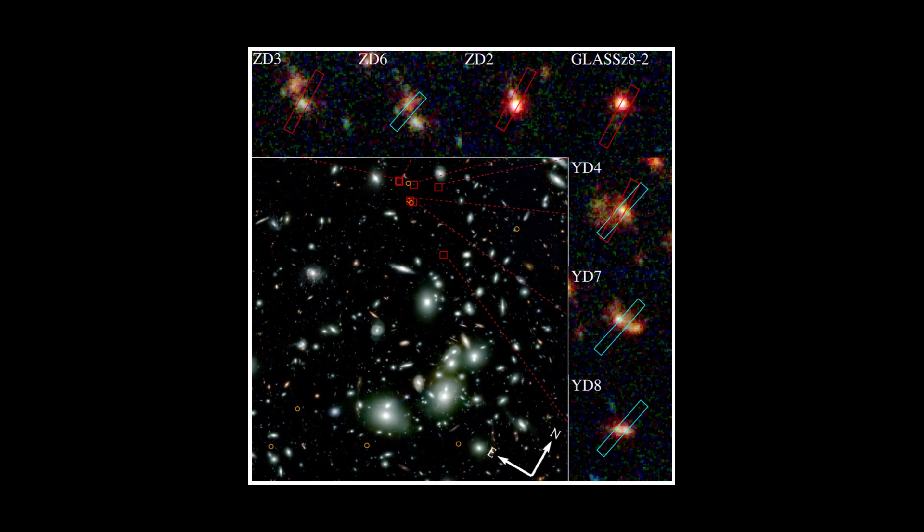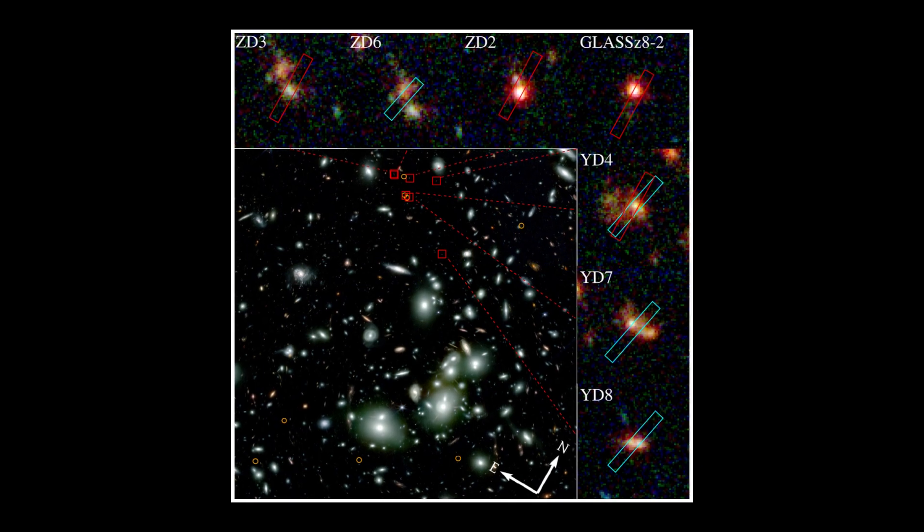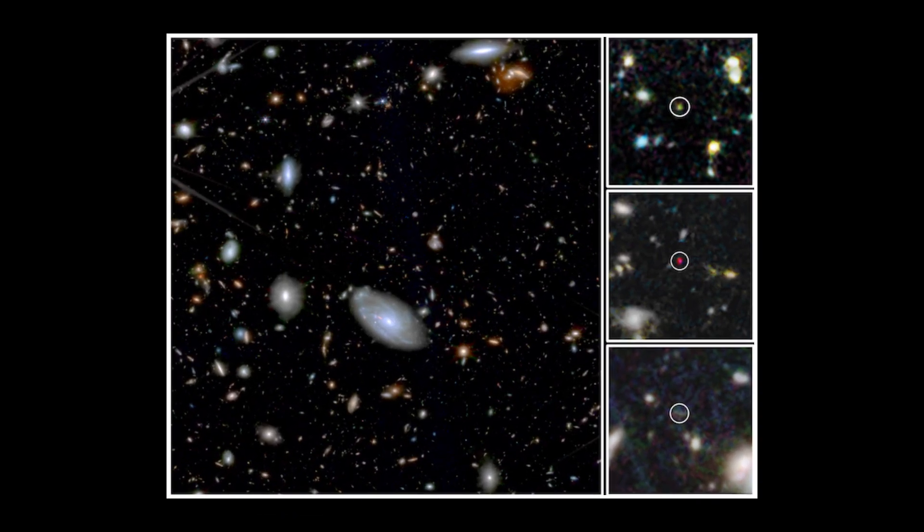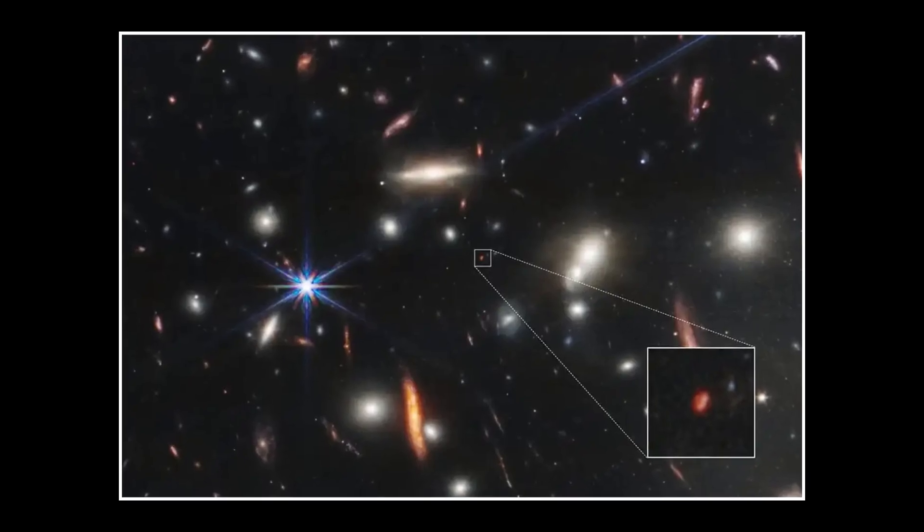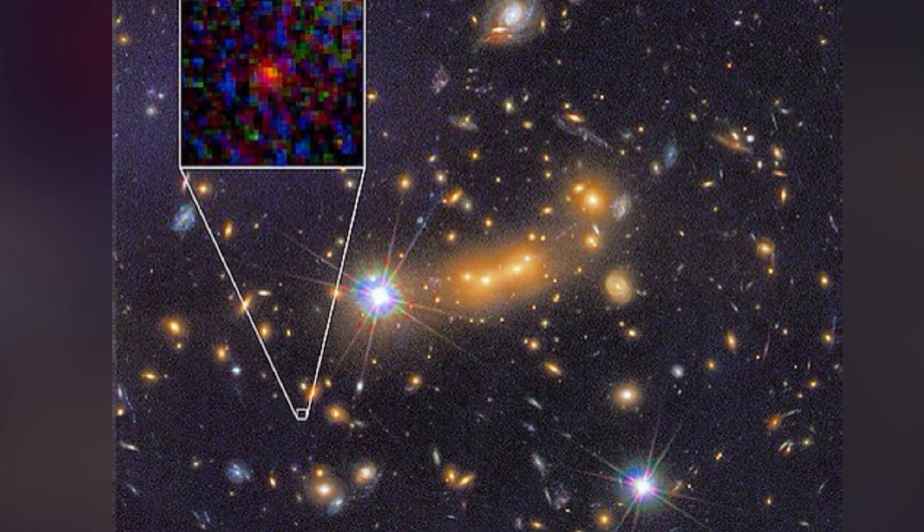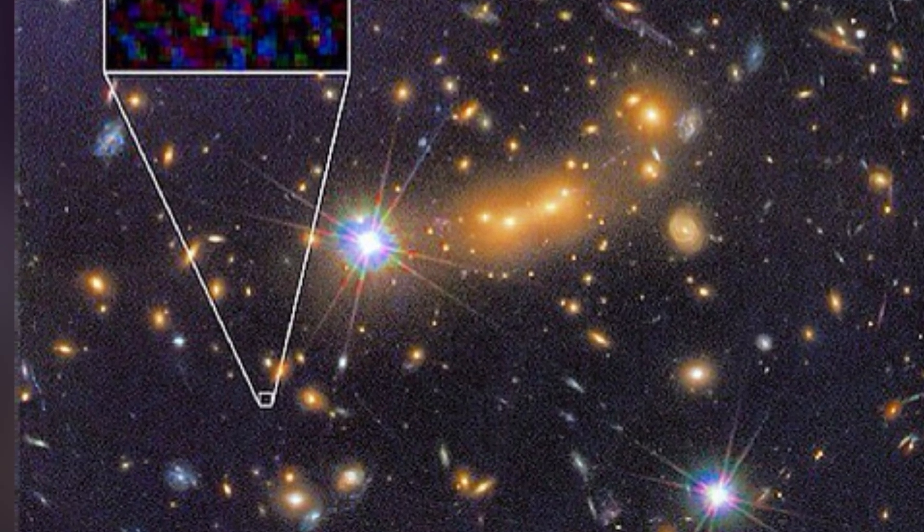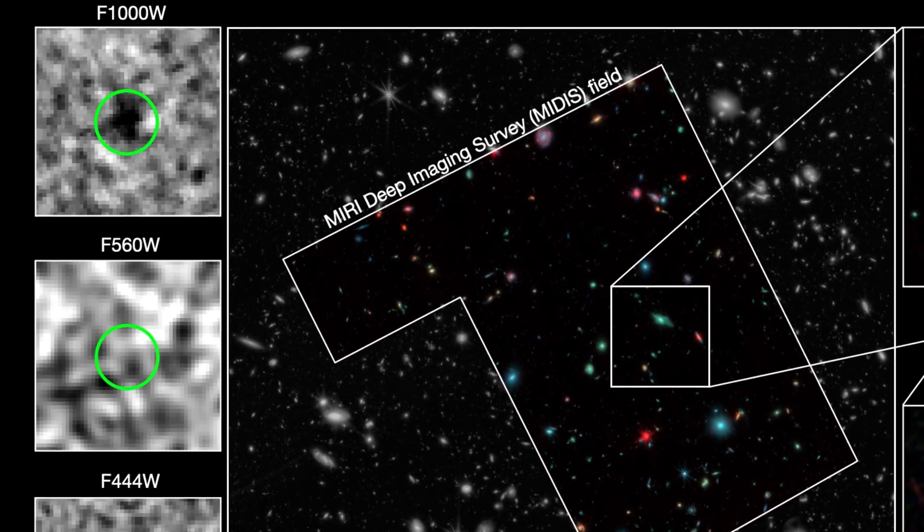Thousands of odd objects are being detected in deep field images, but their exact nature remains unknown. Recently, astronomers identified many peculiar objects from the early universe, noting that these are unlike any early galaxies.